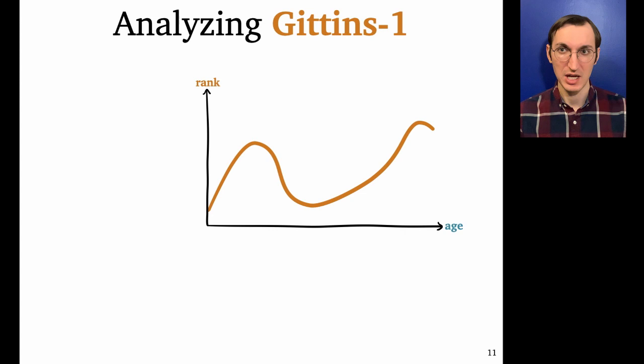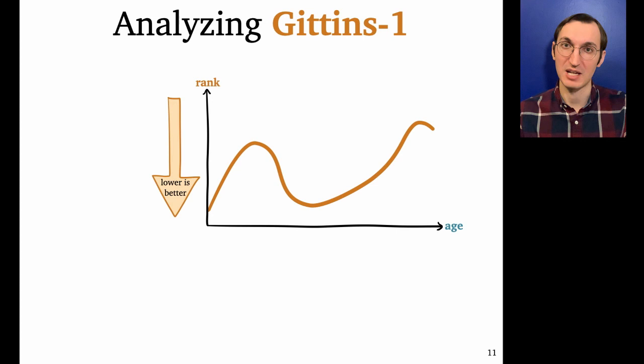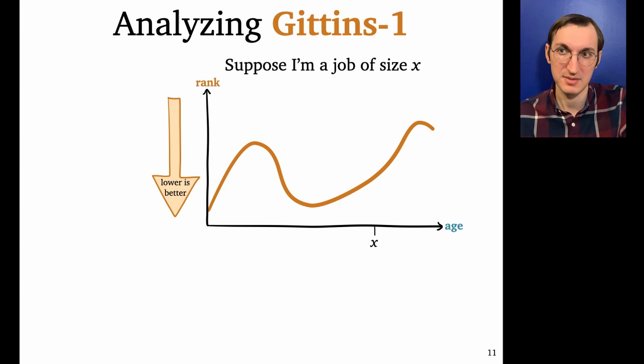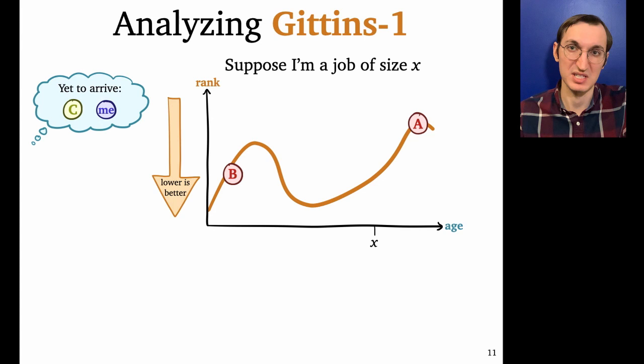So I'm not going to give the full analysis, just the rough idea. So recall that Gittins schedules using a rank function with a convention that lower is better. And it turns out that to analyze its mean response time, it suffices to consider a generic job's story. So let's say I'm a generic job of size X. And I arrive and I see two jobs A and B in the system. And maybe another job C will arrive later. So let's say that this is the moment when I arrive.